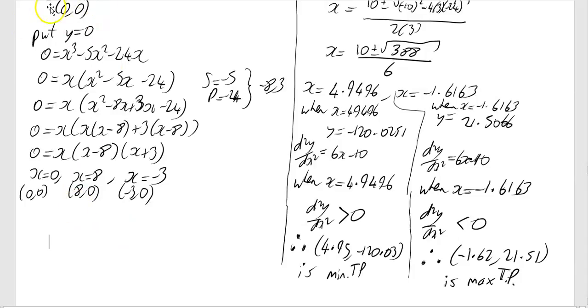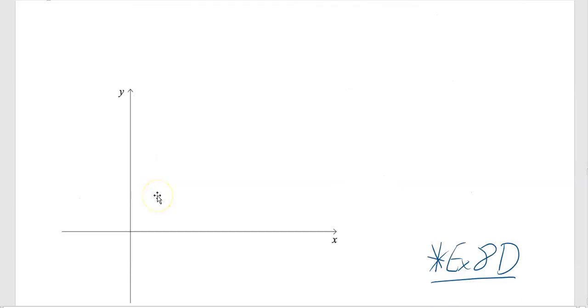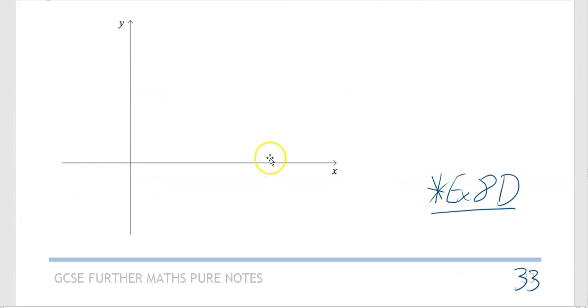We haven't got just as many points as we would normally have because the (0,0) repeated itself. So we've got (0,0), (8,0), (-3,0), and then we've got these two maximum minimum turning points. We're going to plot those. I'm just going to mark those onto the graph now, and then we will show how we draw the thing.